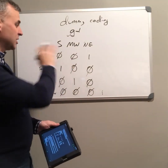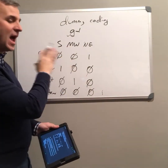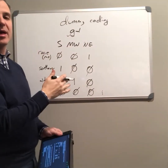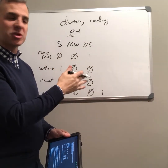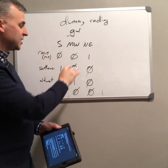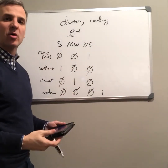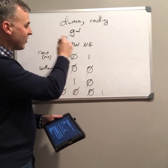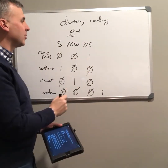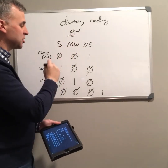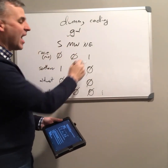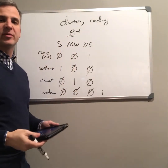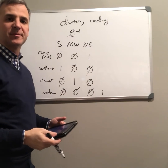Next, we're going to talk about how to actually include that in correlations and in regression equations. But this is how we do the coding: we have the number of variables we need, g minus one, and every case gets a value for each of those variables.